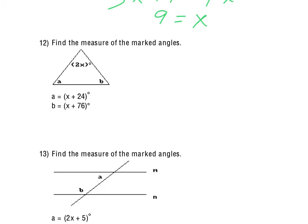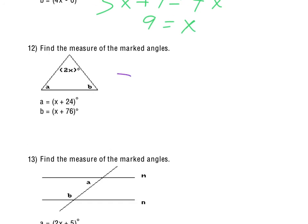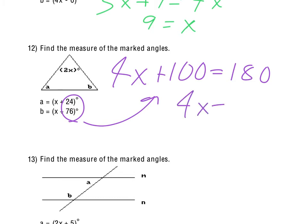For number 12, notice there are 3 marked angles, the 2x, the a, and the b. So all of those added together, since they are the angles of a triangle, would equal 180 degrees. We have a total of 4 x's, and then the 24 and the 76, those added together, ends up being 100. So 4x plus 100 equals 180. We subtract the 100 from both sides, we get 4x equals 80, divided by the 4, we get x equals 20. Again, x equals 20, not the answer. The answer would be the measure of the marked angles. So if x is 20, then 2 times x would be 40 degrees.